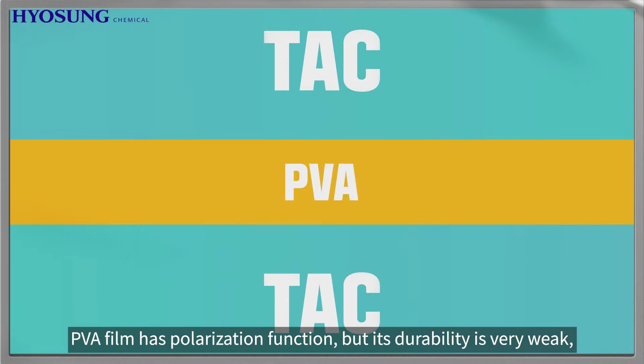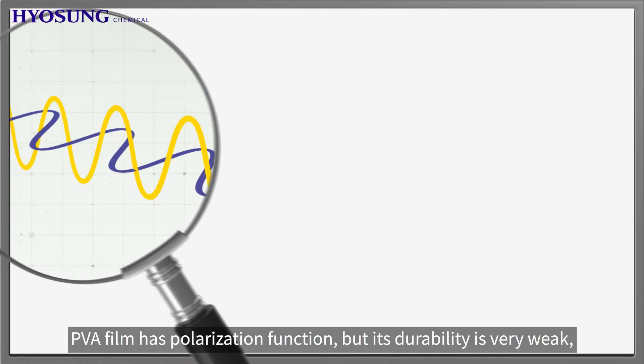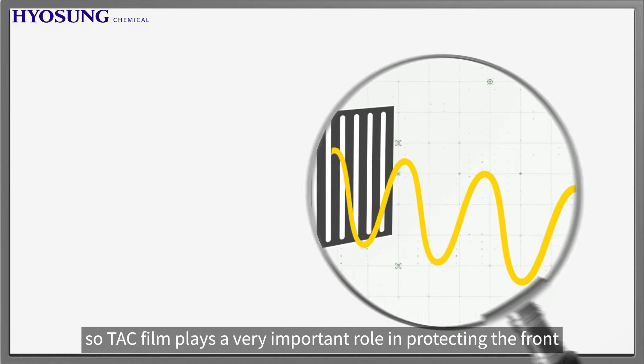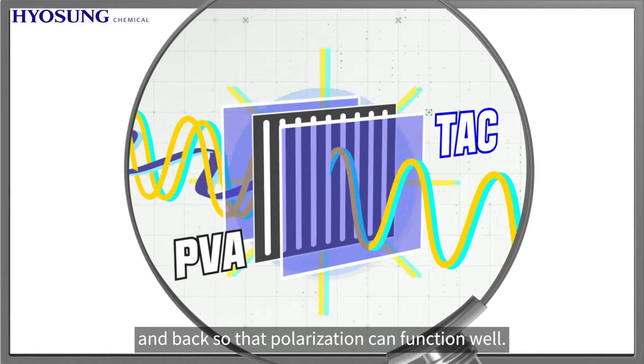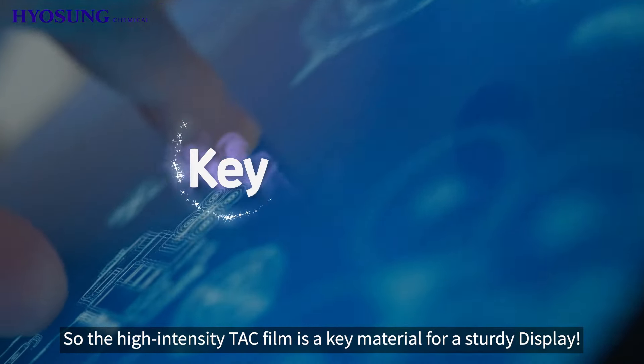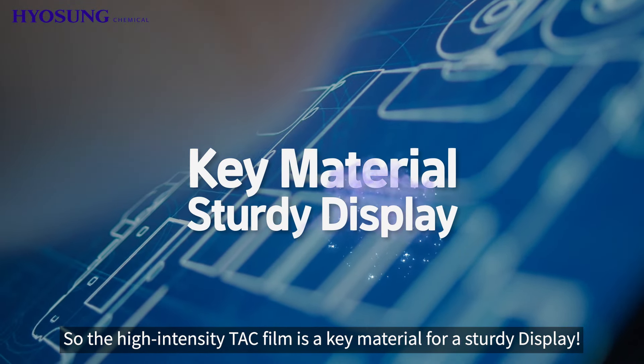PVA film has polarization function, but its durability is very weak. So TAC film plays a very important role in protecting the front and back so that polarization can function well. The high intensity TAC film is a key material for a sturdy display.